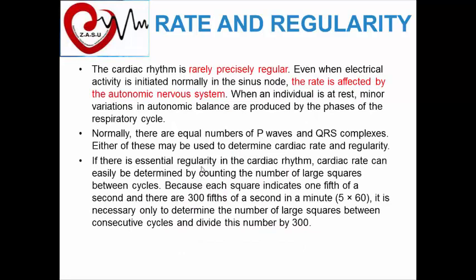The first topic is rate and regularity. The cardiac rhythm is rarely precisely regular, even when electrical activity is initiated normally in the sinus node. The heart rate is affected by the autonomic nervous system, as the SA node has autonomic supply — sympathetic and parasympathetic nerve supply — so there may be slight abnormalities in the normal sinus rate.